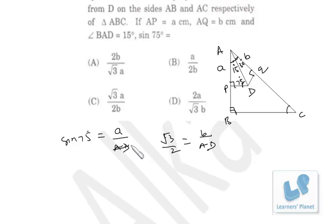I put the value over here. AD is 2B by √3. So what is sine 75°? A√3 by 2B. A√3 by 2B, as simple as that.